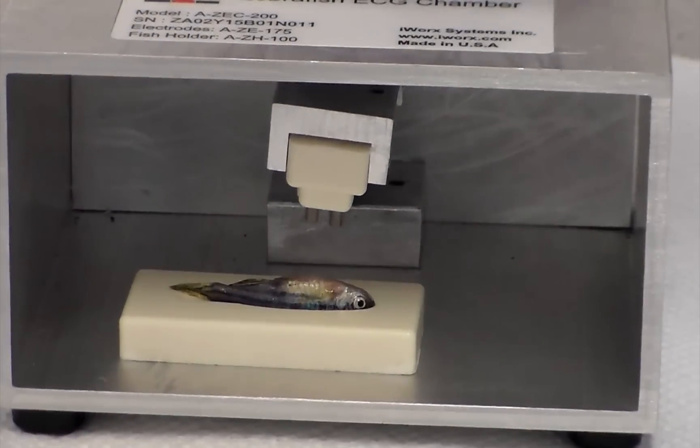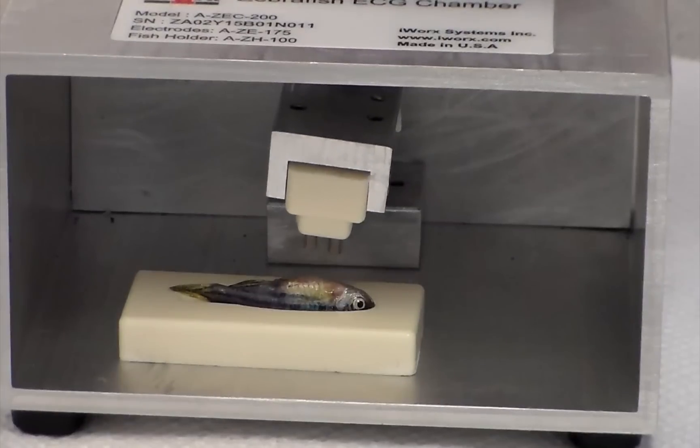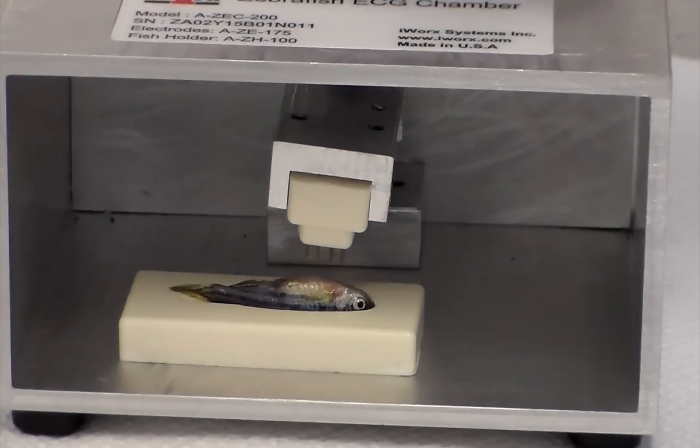Using the turn screw positioner, the electrodes are then gently lowered to make adequate contact with the fish.